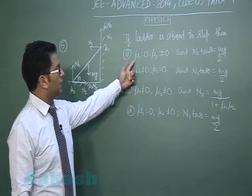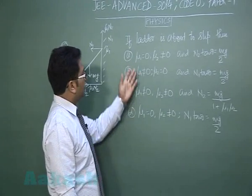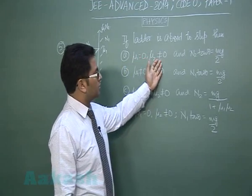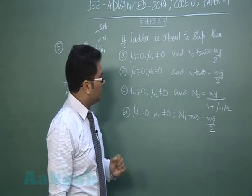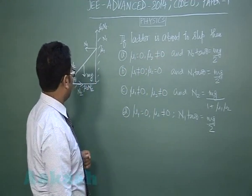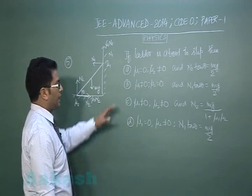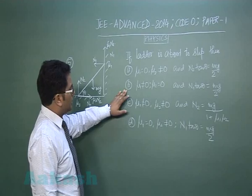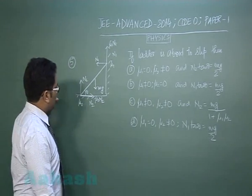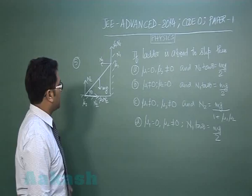The first one is here mu1 is 0, mu2 is not 0, and we got to see in that way. But out of this, you could see one option is already eliminated: B. B can never happen. It's a very normal situation that when the ground is smooth, the ladder cannot be at equilibrium.